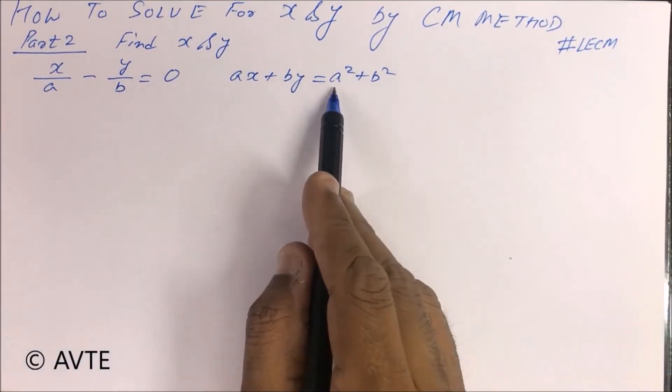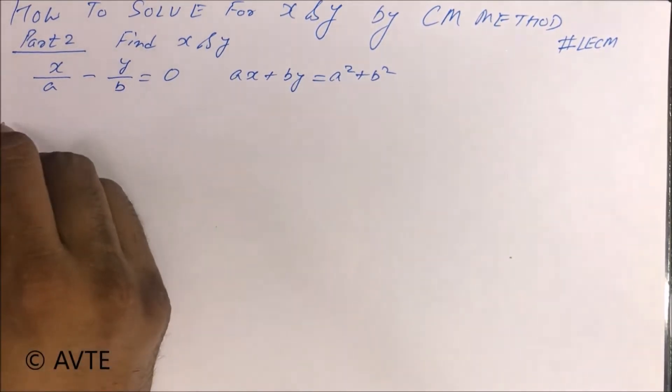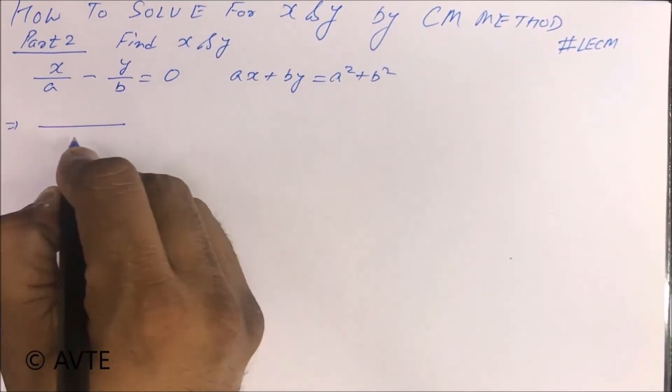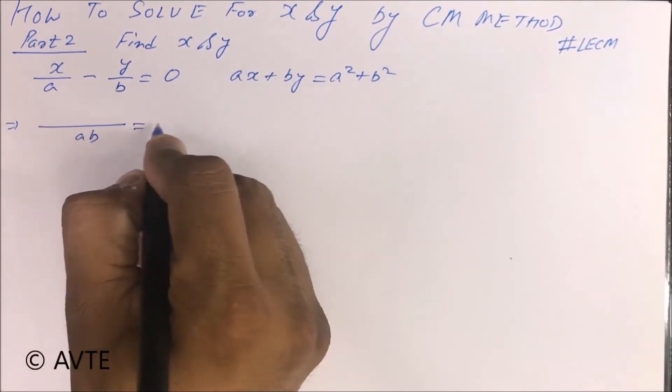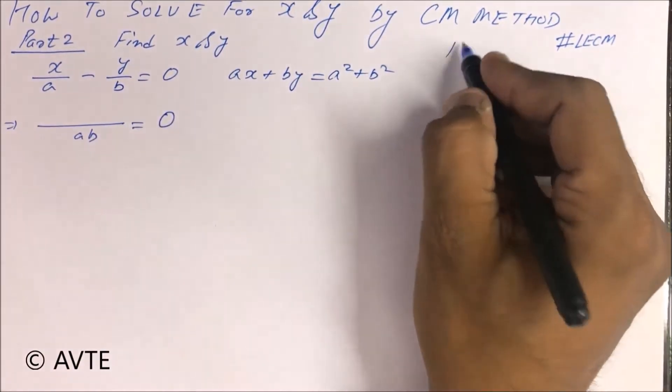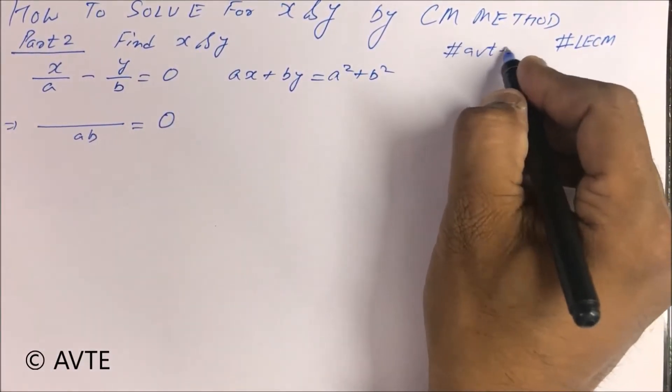AX plus BY is equal to A square plus B square. So guys, if you haven't subscribed our channel till now, kindly subscribe it.